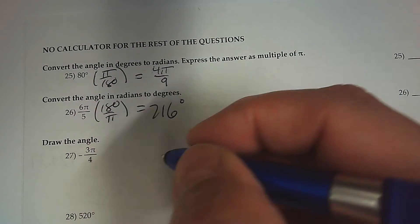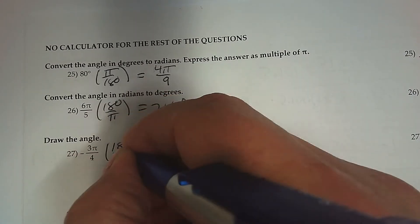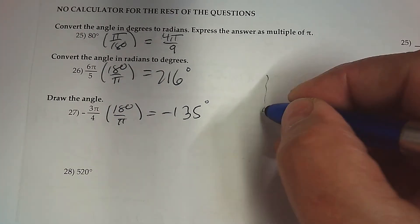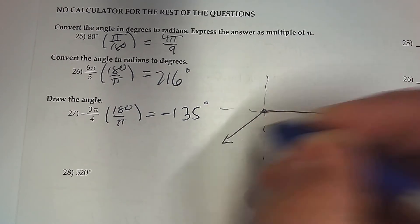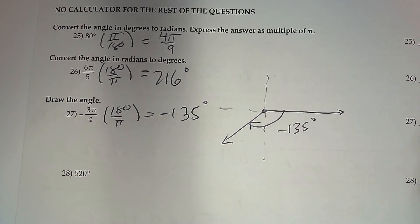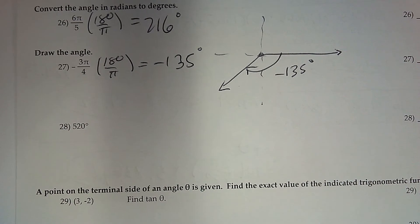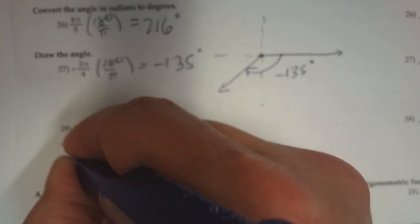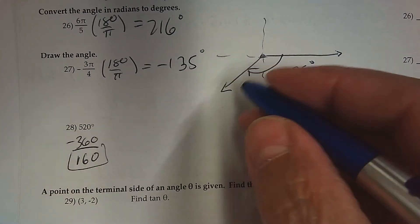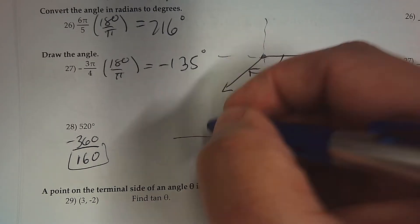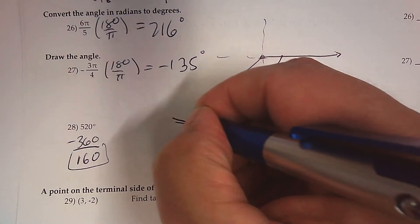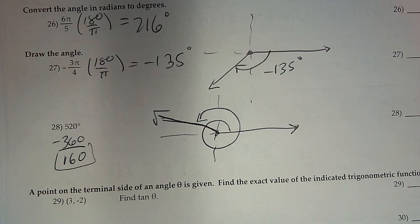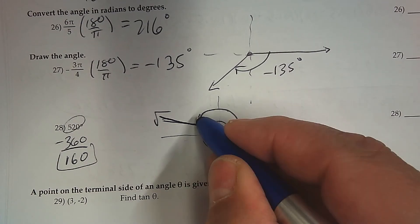To draw the angle negative 3π over 4, convert it: multiply by 180 over pi to get negative 135 degrees. It's going clockwise and lands in the middle of quadrant 3. For 520 degrees, recognize this is more than one rotation. Subtract 360 to find the coterminal angle, which gives 160 degrees. That's in quadrant 2, pretty close to 180. When drawing 520, go one full rotation counterclockwise and then continue to 160 degrees.